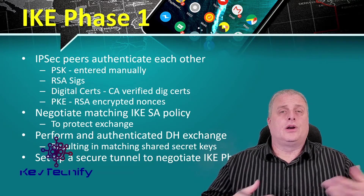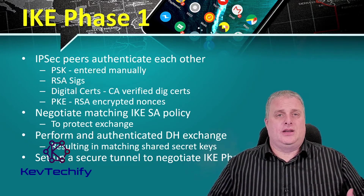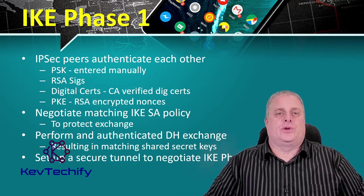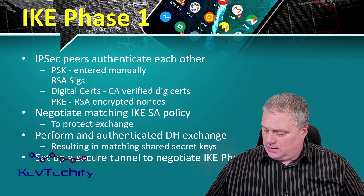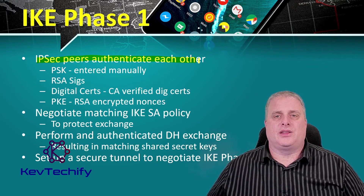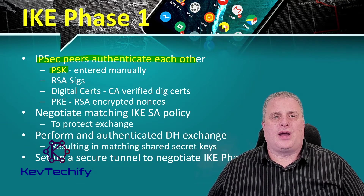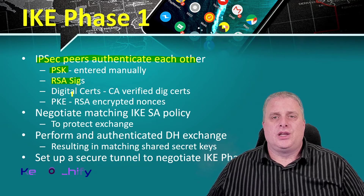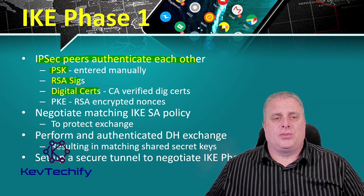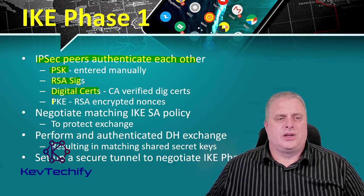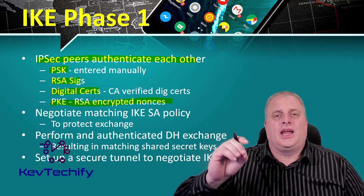Internet Key Exchange Phase 1, or IKE Phase 1, happens in main mode or aggressive mode. In main mode, the identity of the IPsec peers is hidden. In aggressive mode, the identities are vulnerable to network sniffing. IKE Phase 1 follows these steps. One, the IPsec peers authenticate each other. This can happen through pre-shared keys, which you have to enter in manually, RSA signatures, digital certificates — verified by the certificate authority — public key encryption, or PKE, which uses RSA encrypted nonces. A nonce here is a randomly generated number.